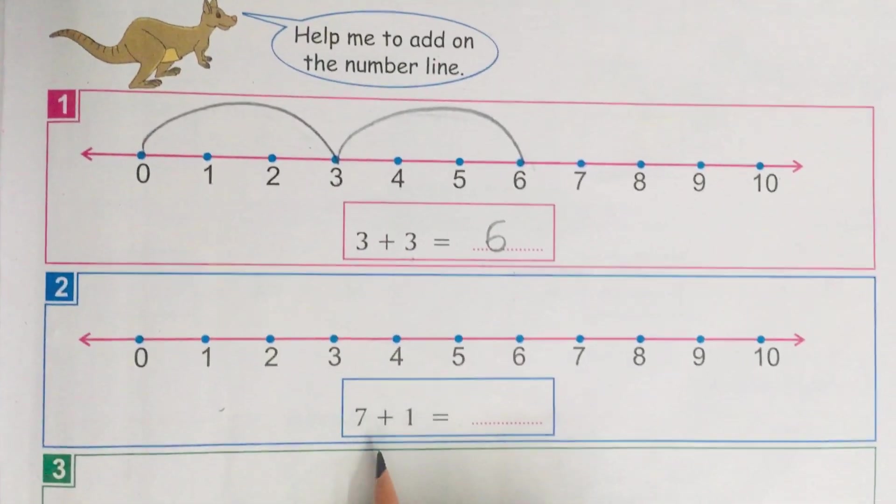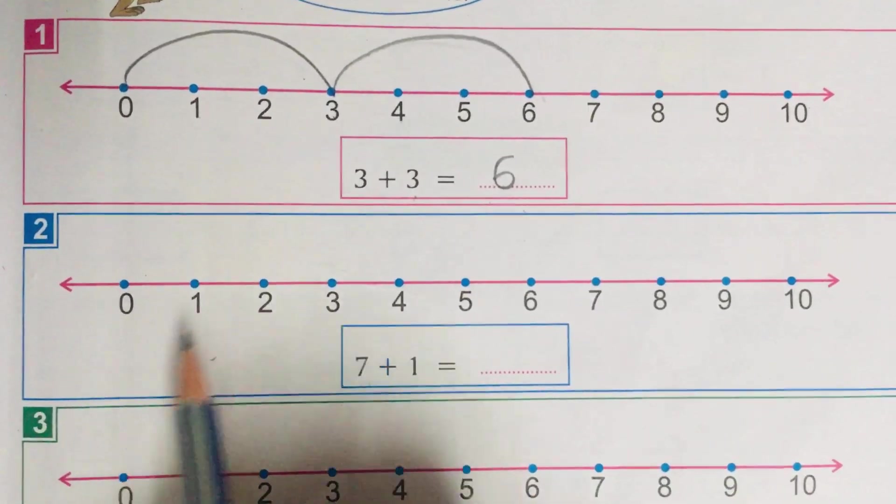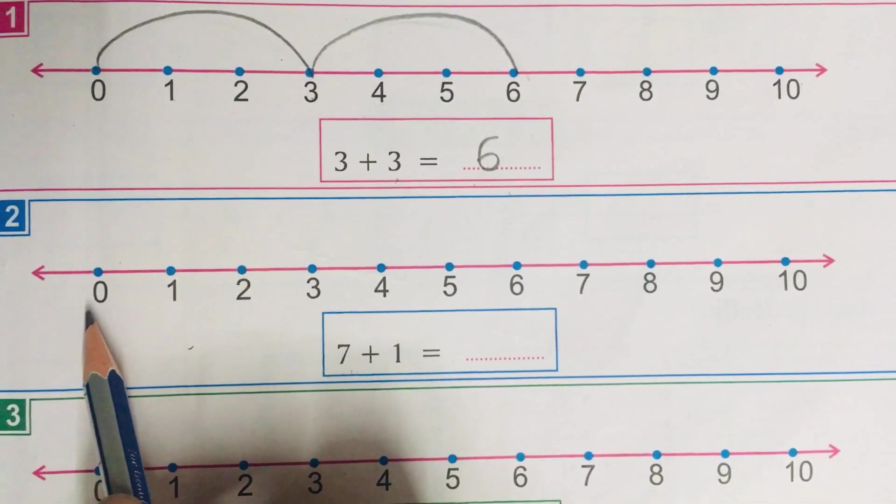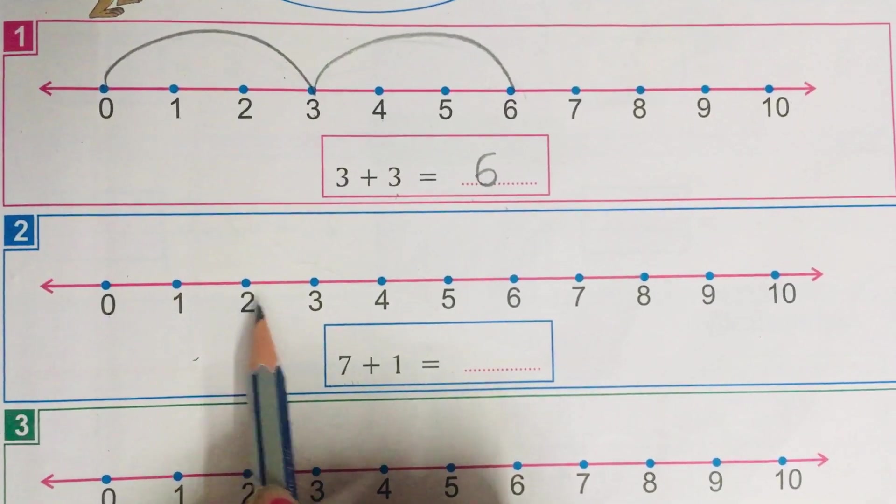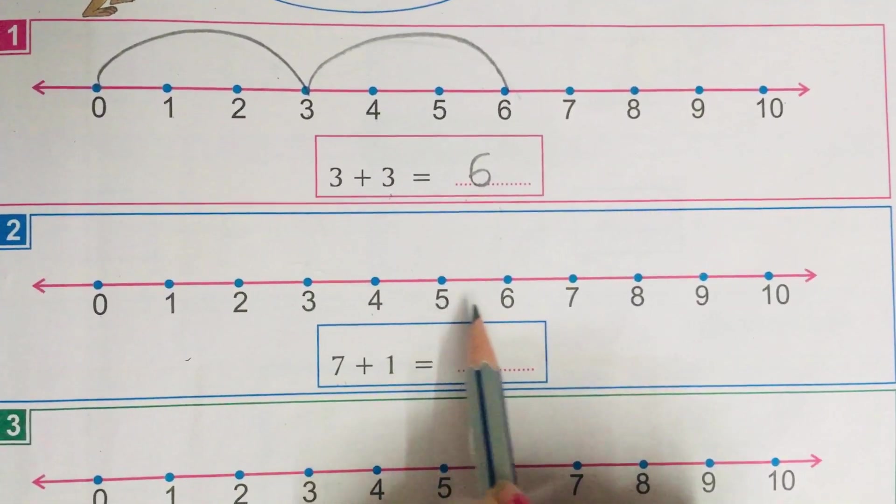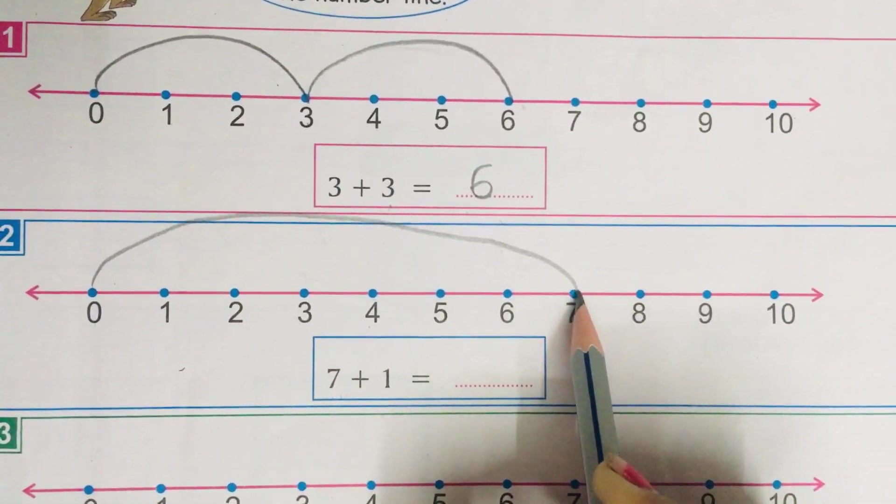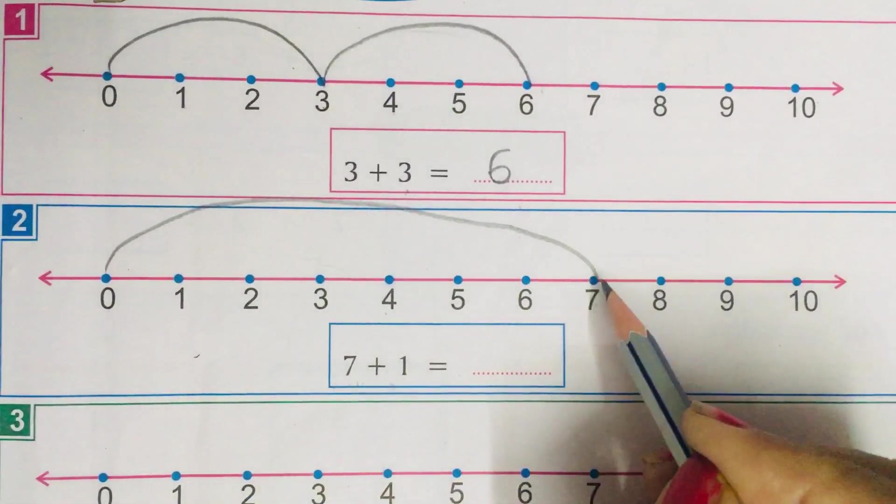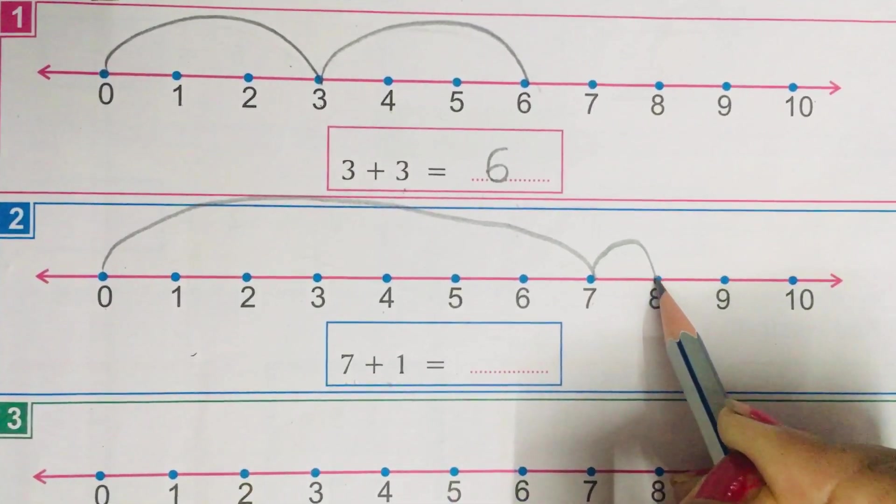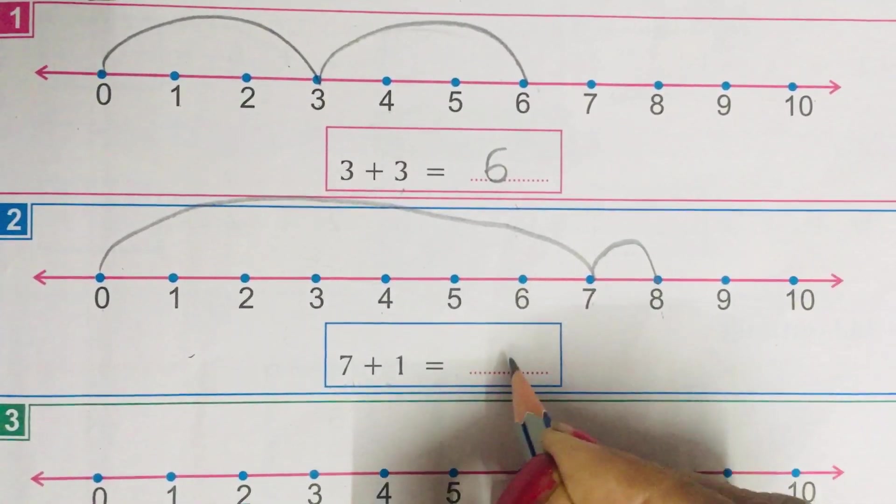Again, second line. 7 is written over here. So, you count, start counting with me: 0, 1, 2, 3, 4, 5, 6 and 7. We will jump till 7 like this. Then, 1 is written. So, we will jump 1 again. So, our answer will come 8.